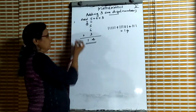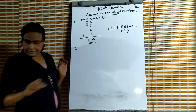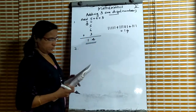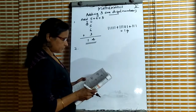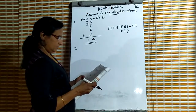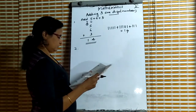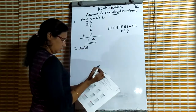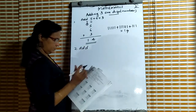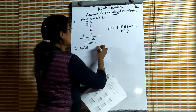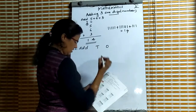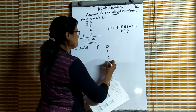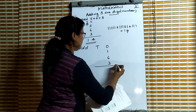One more question. Write the heading and write this question in your notebook. Next question: add 1 plus 6 plus 3. In the table: tens place and ones place, we have 1, 6, 3.